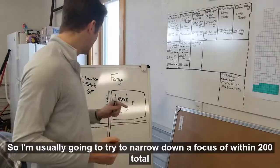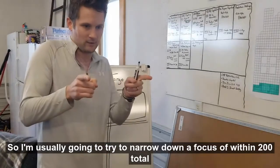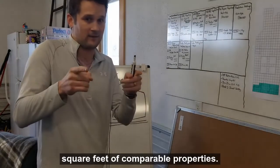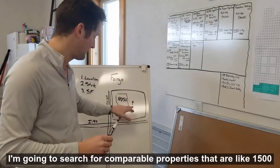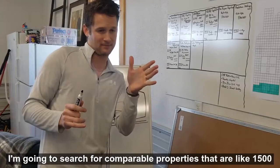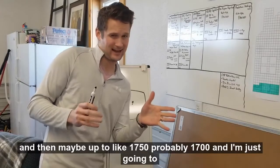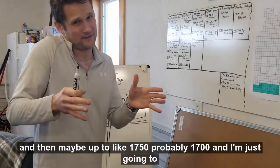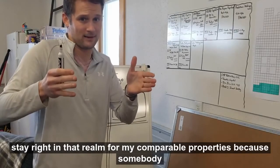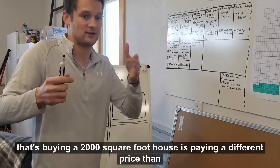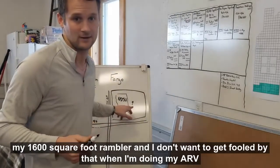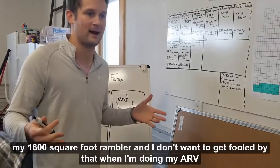So I'm usually going to try to narrow down a focus of within 200 total square feet of comparable properties. So this property right here, 1600 square feet, I'm going to search for comparable properties that are like 1500 and then maybe up to like 1750, probably 1700. And I'm just going to stay right in that realm for my comparable properties because somebody that's buying a 2000 square foot house is paying a different price than my 1600 square foot Rambler, and I don't want to get fooled by that when I'm doing my ARV.